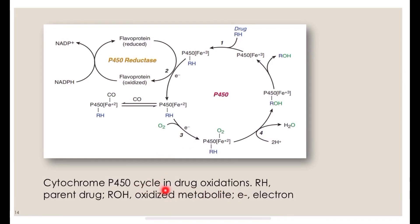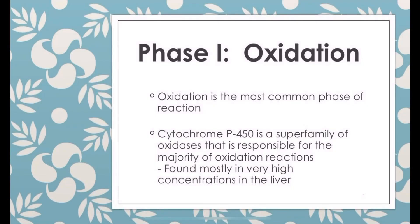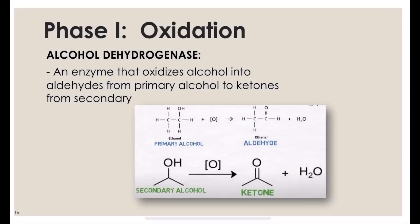In the CYP450 cycle, drug oxidations produce an oxidized metabolite. Oxidation is the most common phase 1 reaction. Cytochrome P450 is a superfamily of oxidases responsible for the majority of oxidation reactions, found mostly in high concentrations in the liver. Oxidation involves alcohol dehydrogenase, an enzyme that oxidizes alcohol into aldehydes from primary alcohols, and to ketones from secondary alcohols.